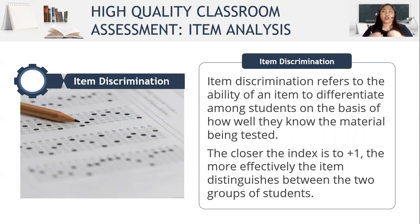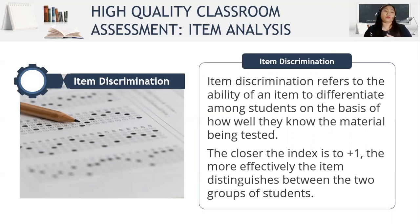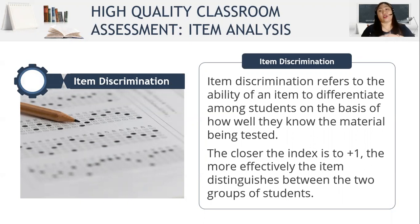With positive discrimination, learners from the higher group choose the correct response more than those in the lower group. For negative discrimination, those from the lower group choose the correct response more than those in the higher group. And when we say zero discrimination, they have an equal number — for example, five from the higher group and five from the lower group chose the correct response, so there is zero discrimination.